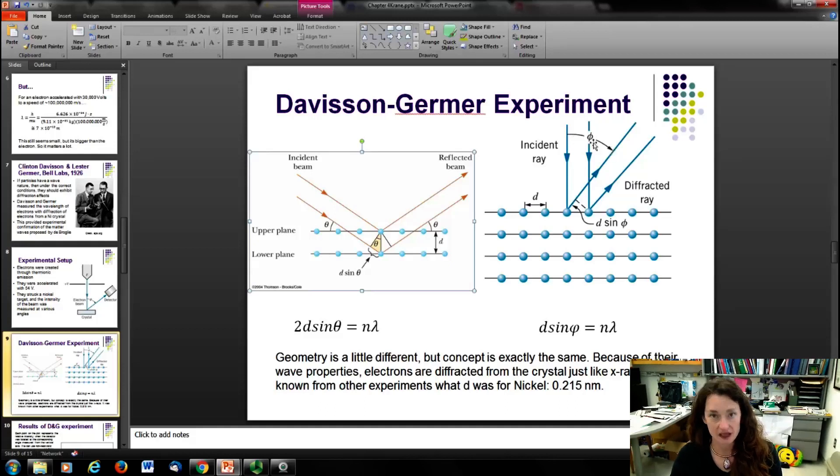So, like I said, the geometry is a little different, but the concept is basically exactly the same. You have these neighboring beams of electrons that interfere with one another and create constructive interference. Specifically at some angle φ that constructive interference occurs at. Now, they already knew the nearest neighbor spacing of the atoms, d, here, for nickel. It was 0.215 nanometers, and it had been measured independently, probably by x-ray diffraction.